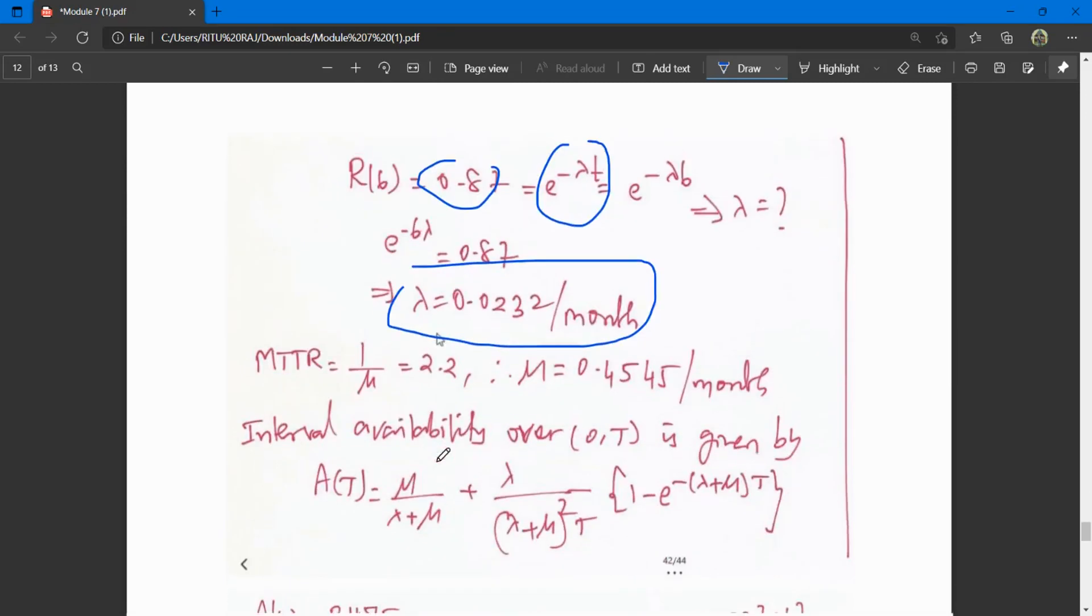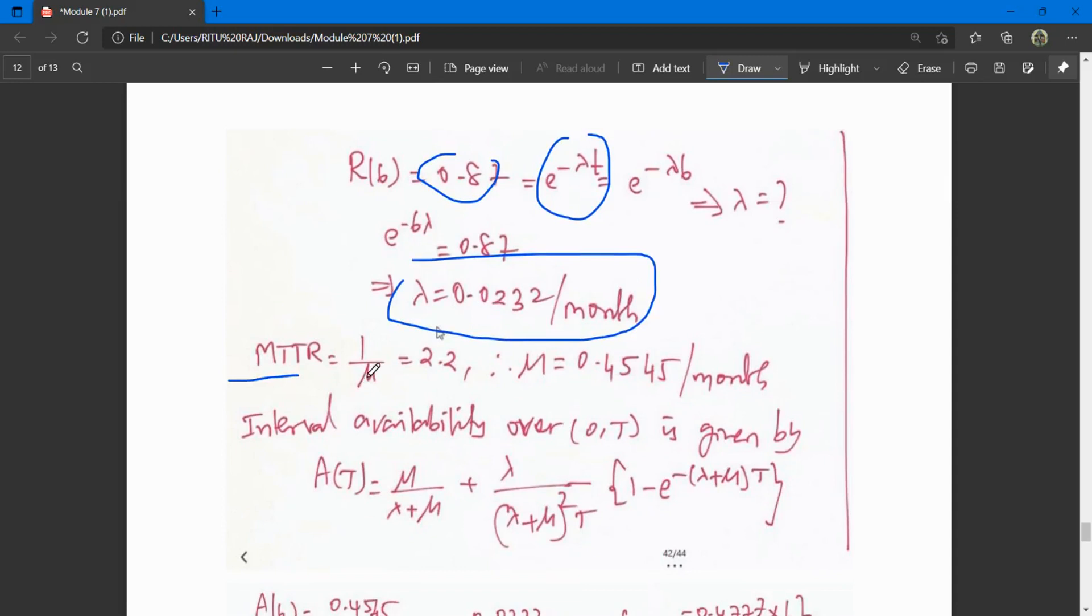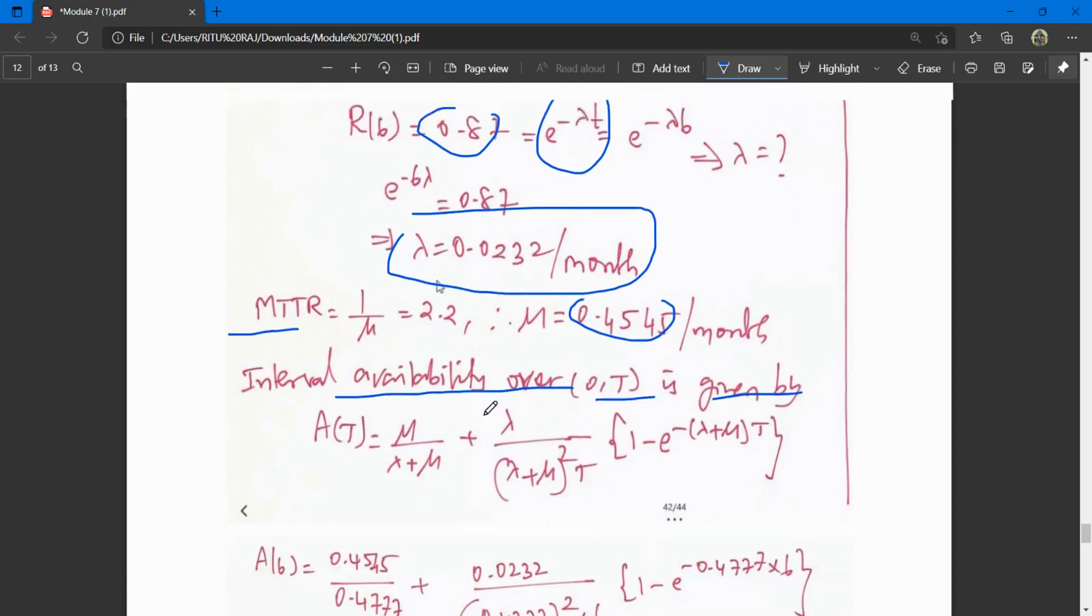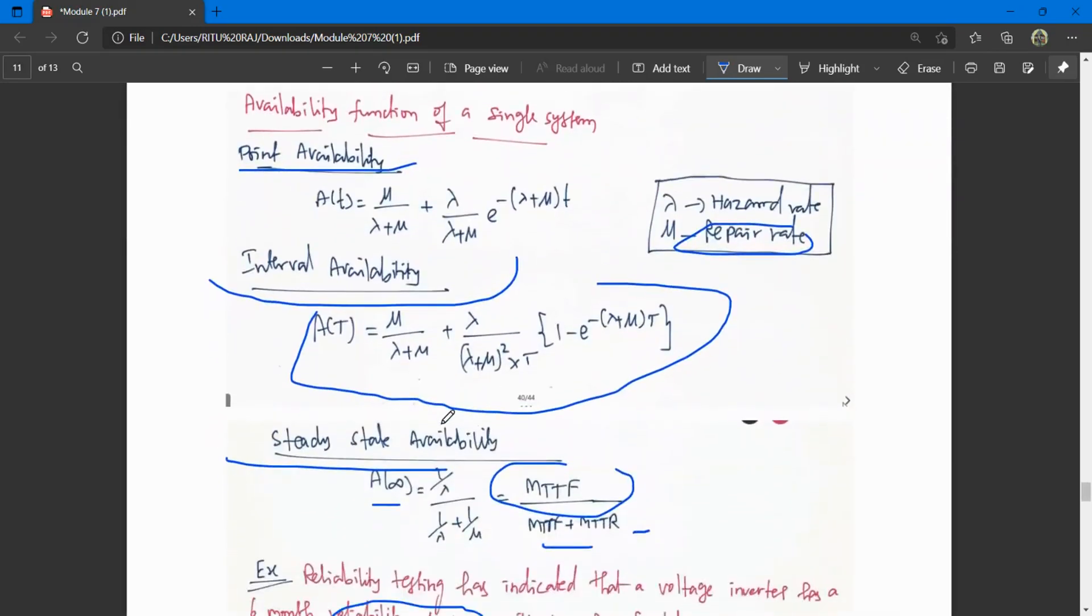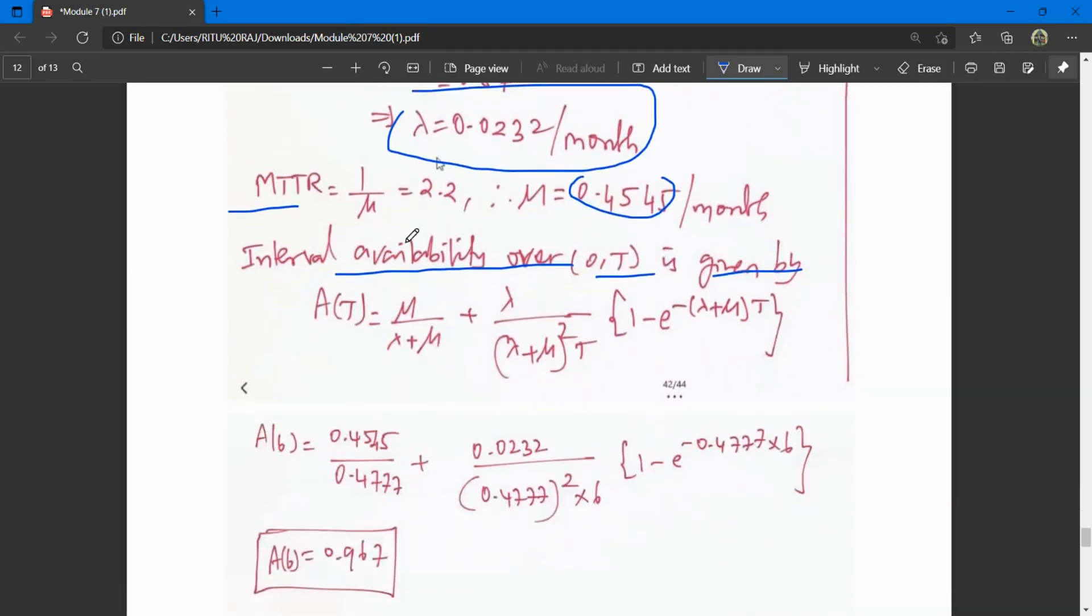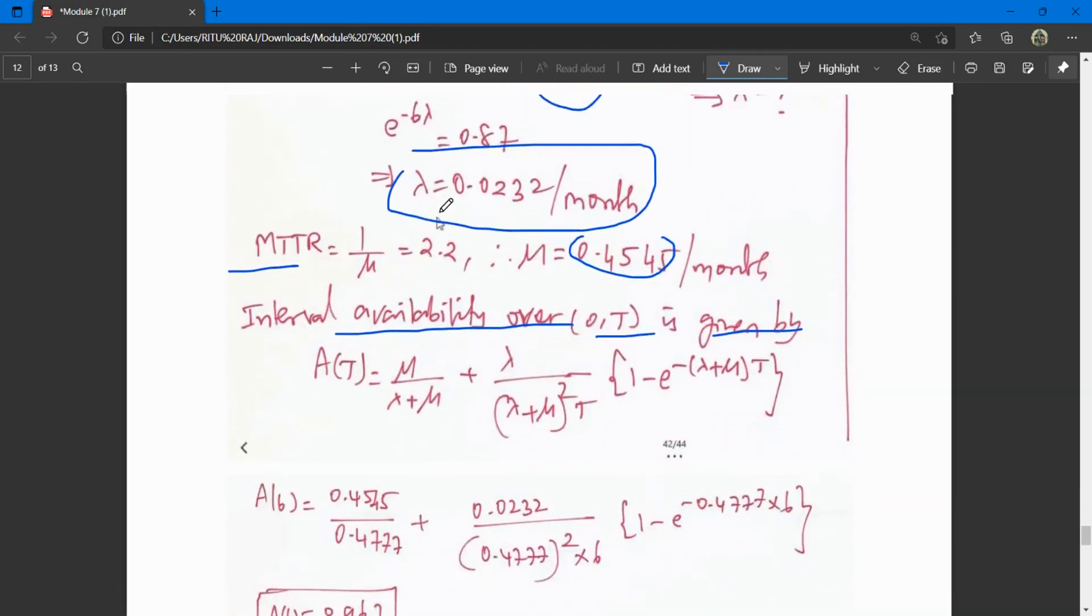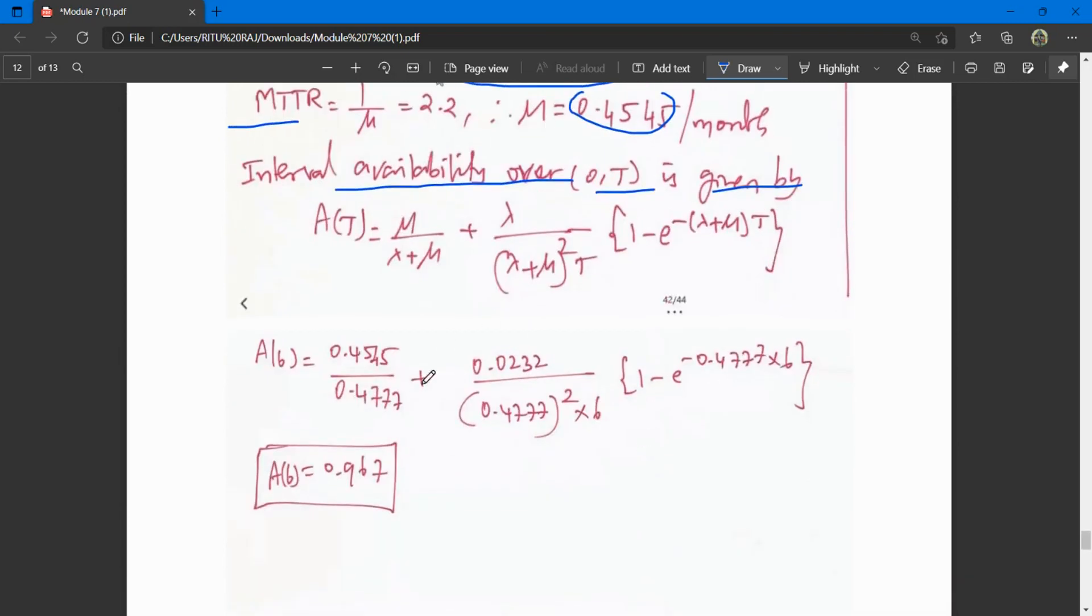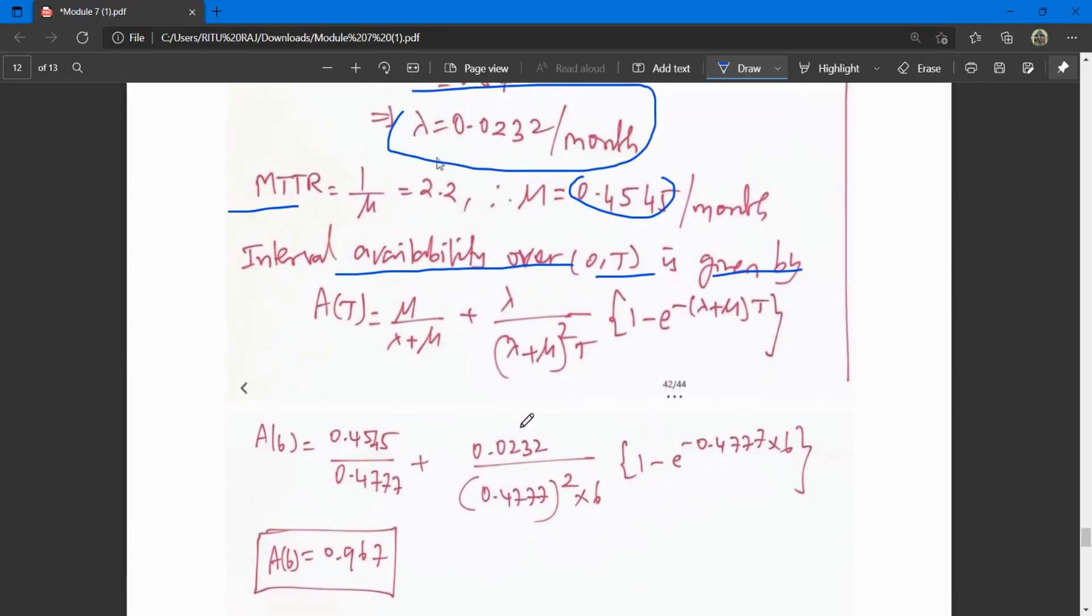MTTR is 1/mu, where mu is 0.4545 per month, so MTTR equals 2.2 months. Interval availability over 0 to t is given by the formula. Just put the values of mu and lambda and you'll get the answer.